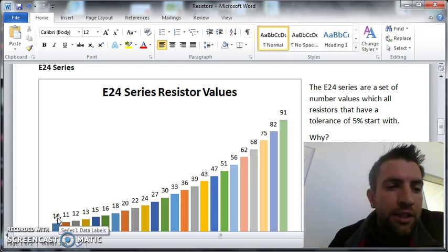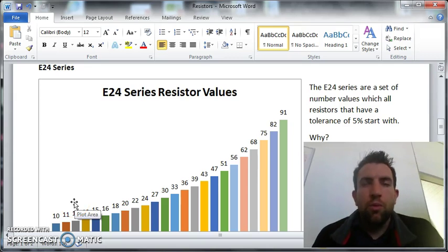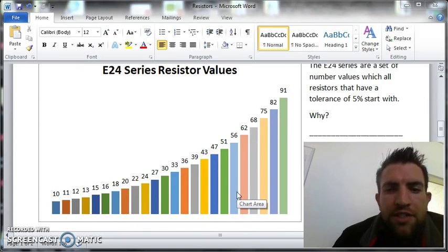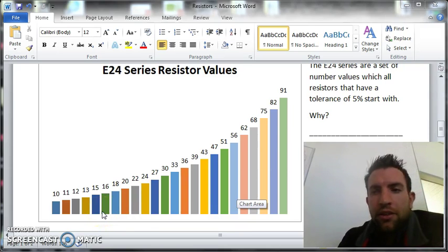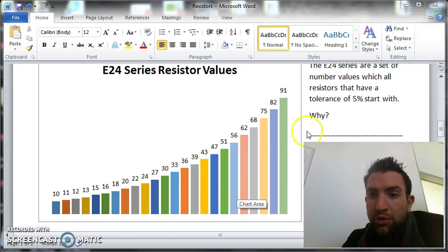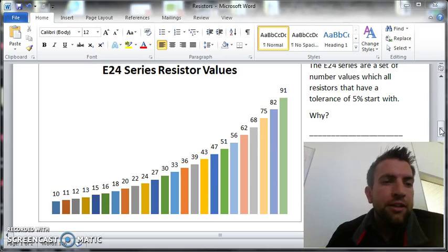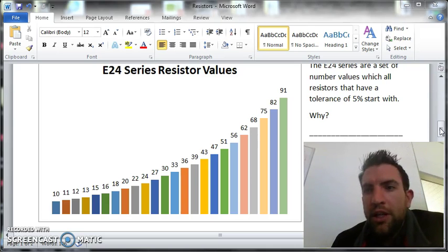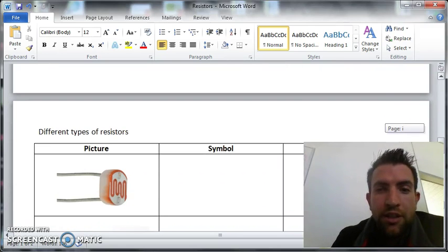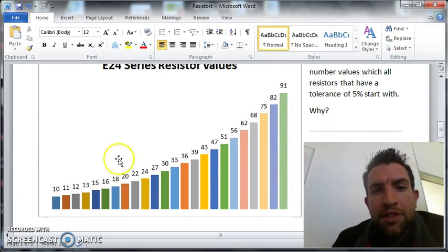The next one is 110 ohms. Five percent of 110 is 5.5, so the lowest it can be is 104.5. Notice that the lowest value of a 110 ohm resistor is 104.5, while the highest value of the 100 ohm resistor is 105 - they overlap. This works all the way up the E24 series.